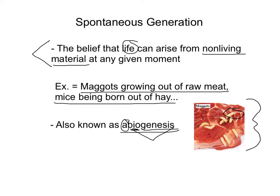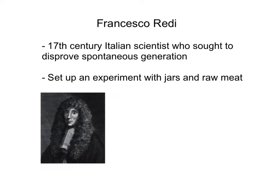We can thank three different scientists. Francesco Redi, a 17th century Italian scientist — and 17th century is the 1600s — who sought to disprove spontaneous generation. He set up an experiment with jars and raw meat. Here is Mr. Redi, quite a regal gentleman.